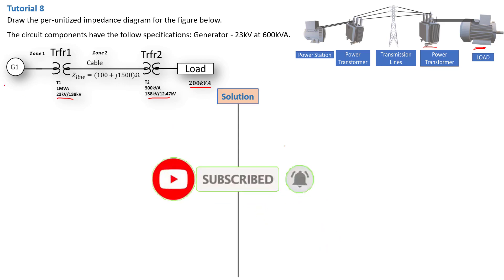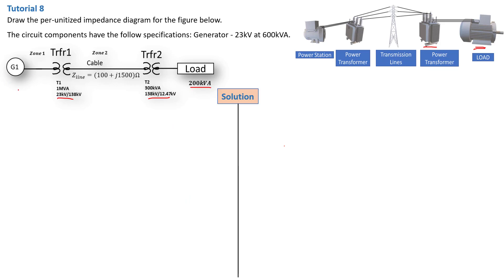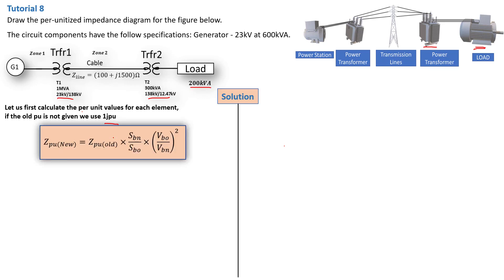In order to calculate the per unit equivalent of each of these components, you need the old per unit. If the old per unit is not given, you have to use 1 as the old per unit. We know what the general formula of the per unit is, and that formula is going to be used to calculate the per unit of each one of these components.